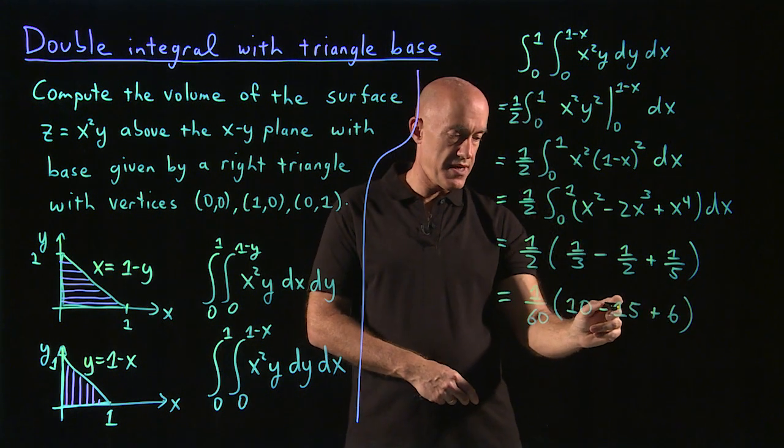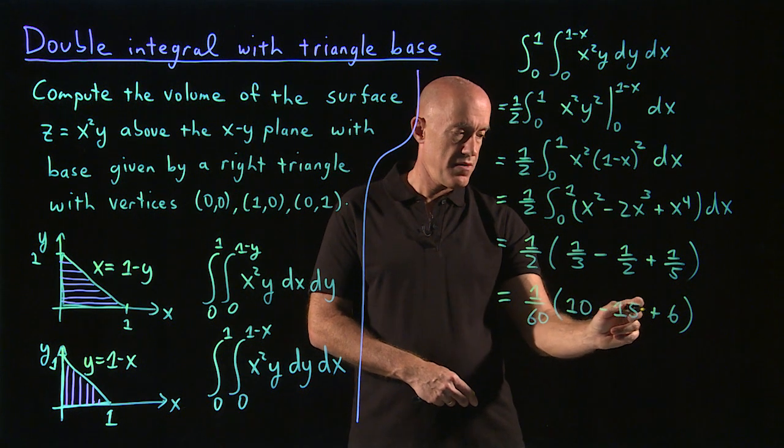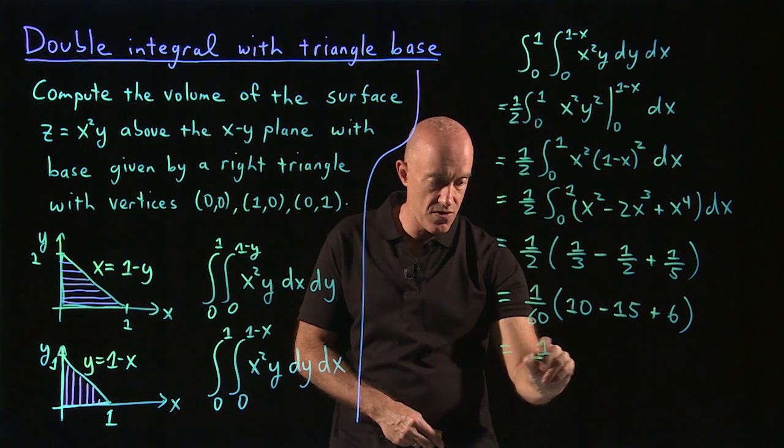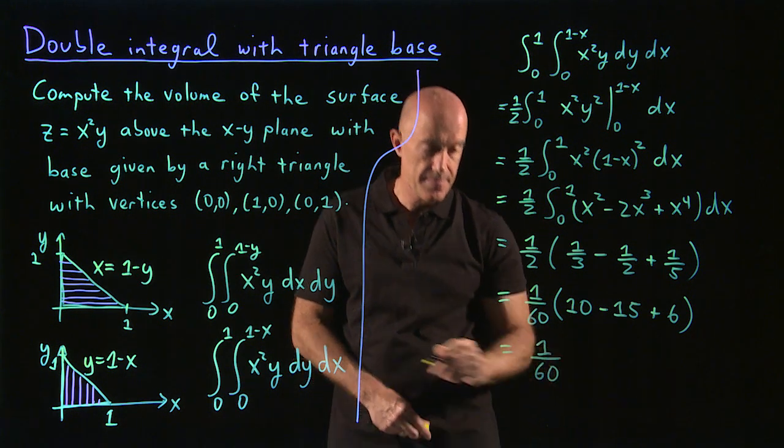So this is minus 5 plus 6 is 1, so this will just be 1 over 60.